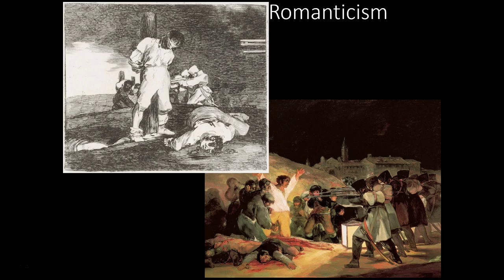Goya's Disasters of War series was not printed until 35 years after the artist's death, when it was finally safe for his political views to be known. The images remain shocking today and even influenced the famous American author Ernest Hemingway's For Whom the Bell Tolls, a novel about the violence and inhumanity of the Spanish Civil War. Hemingway shared Goya's belief that war, even if justified, brings out the inhumanity in man. For both artists, anyone who examines the dismembered corpses of Goya's aquatint series — or reads Hemingway's gruesome descriptions of murder — and does nothing to stop the violence is complicit with the murderer.